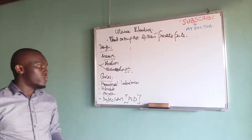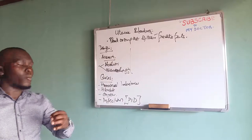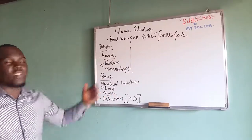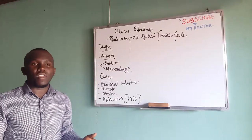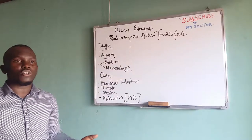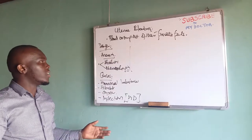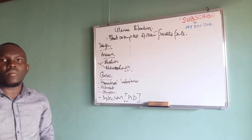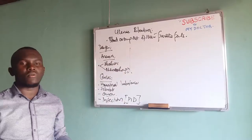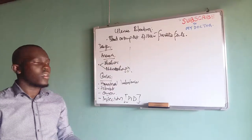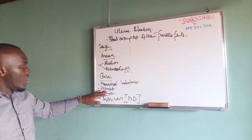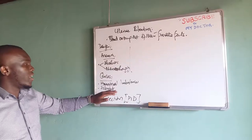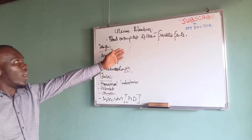We need to understand these causes so we can avoid them. Last time we were talking about Levonorgestrel as an emergency contraceptive pill that someone takes just after unprotected sex to prevent conception. One of the likely dangers of Levonorgestrel is that it will cause hormonal imbalances. Bleeding during menstrual cycles is controlled by hormones, so if these hormones do not balance up well and are not at recommended levels, you could have this kind of effect.